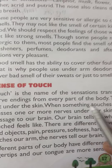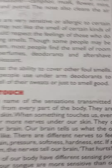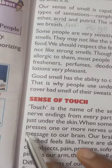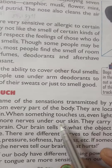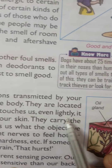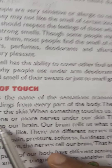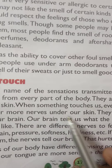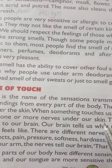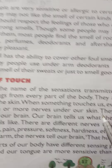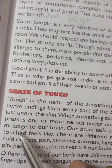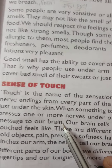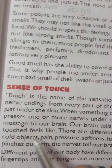Nerves are located in every part of the body, just under the skin. When something touches us, even lightly, it presses one or more nerves under our skin. These nerves carry the message to our brain, which tells us what the object we touch feels like.